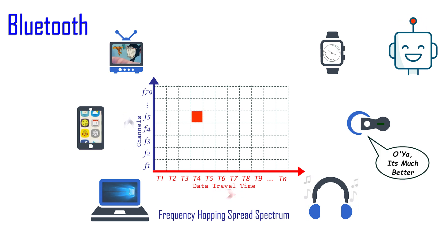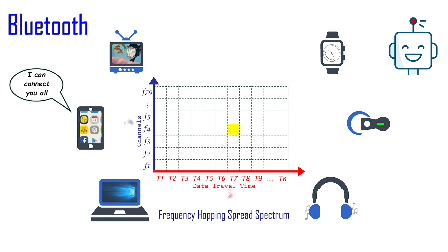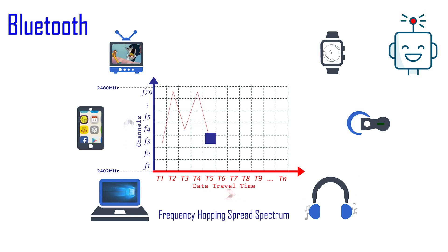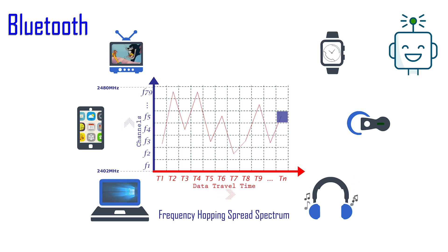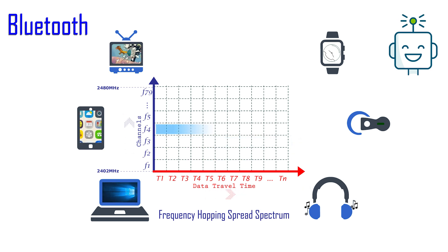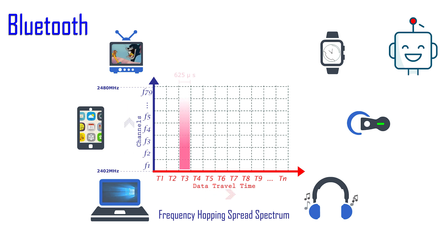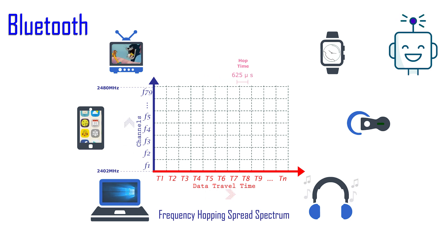Bluetooth sends and receives radio waves in a band of 79 different frequencies or channels, centered on 2.45 GHz. In this diagram, the 2.4 GHz frequency band is divided into 79 different channels, from F1 to F79, with 1 MHz bandwidth per channel. The data travel time is divided from T1 to TN, where each tiny segment is called the hop time, which is 625 microseconds.